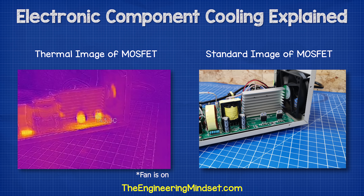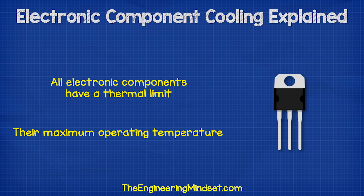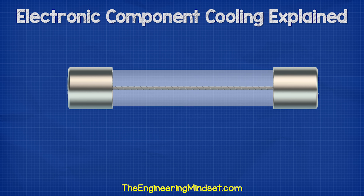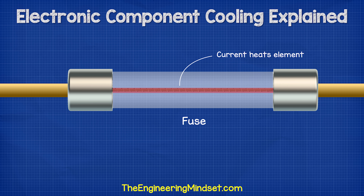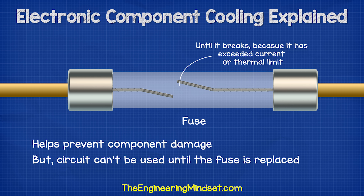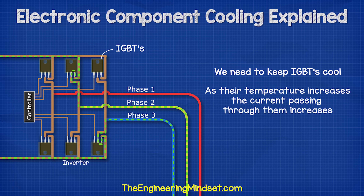I cut the power at this point because I didn't want to damage the components. All electronic components have a thermal limit or a maximum operating temperature. When they reach or exceed this certain temperature, they will break down and potentially destroy the circuit board. For some components like a fuse, this is desirable because the material breaks and this instantly cuts the power to the circuit. This helps to prevent component damage, but it also completely stops the circuit board from working until the fuse is replaced. With components like an IGBT, the buildup of heat isn't a good thing, because as they increase in temperature, they become unreliable and the current passing through them increases.